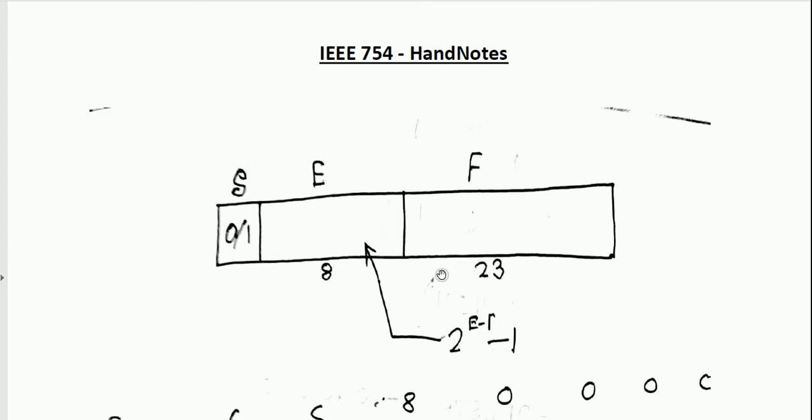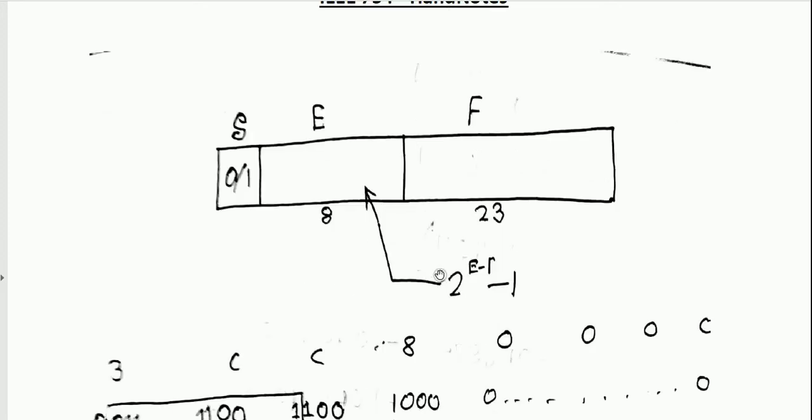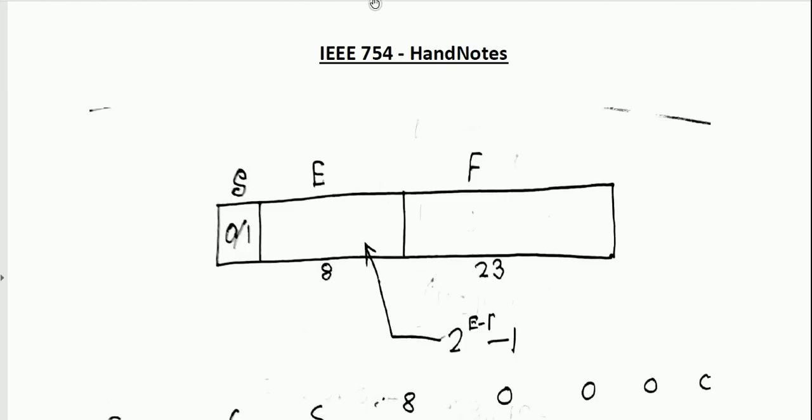The topic today is IEEE 754 and today it's going to be a quick lesson. We're going to go through a quick review. First thing I want to show you is the format. So as you can see, 23, 8 and 1 over here. Total we have 32 bits.